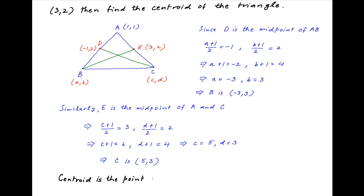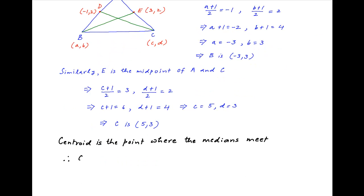The centroid of triangle ABC is the point where the medians meet — that is, it is the point of intersection of median CD and median BE.